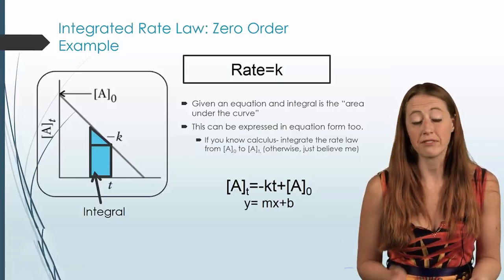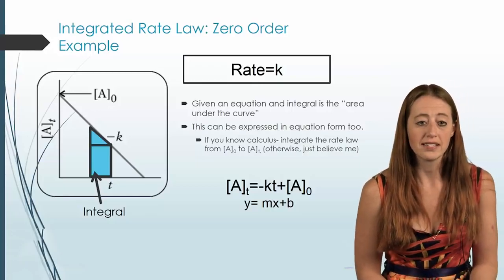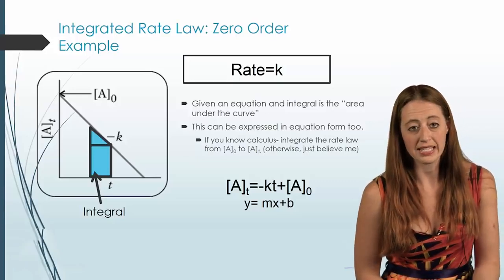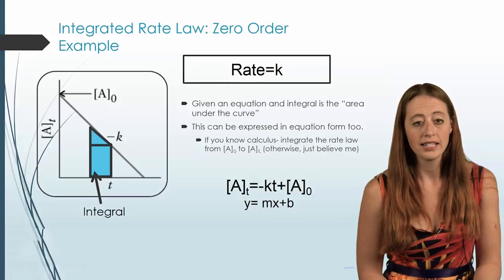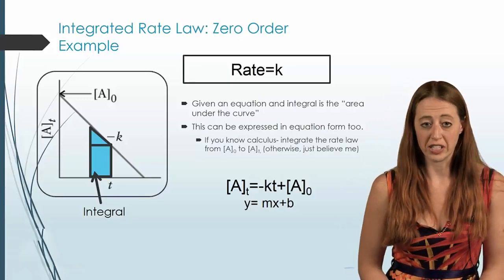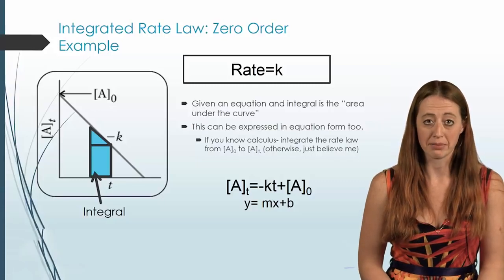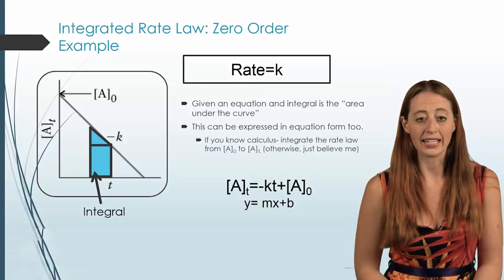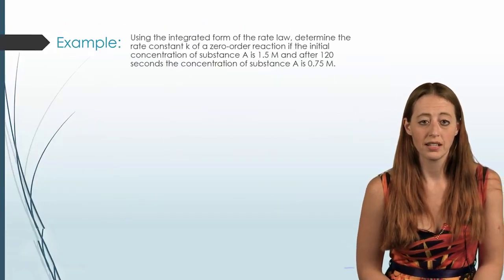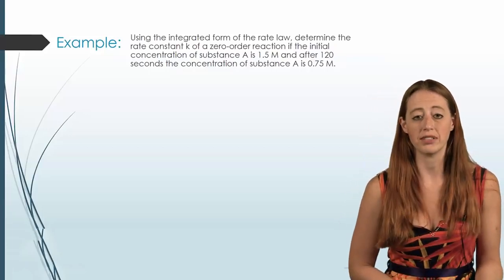We call this the integrated rate law because it's like rate equals k, but it's the integrated version. For zero order only — we'll have different ones for first and second order — the concentration at time t equals negative kt, where k is the rate constant and t is time, plus A-naught (initial concentration). This takes the form y = mx + b, a straight line with a slope of negative k. That's one useful way to pull k from a graph.